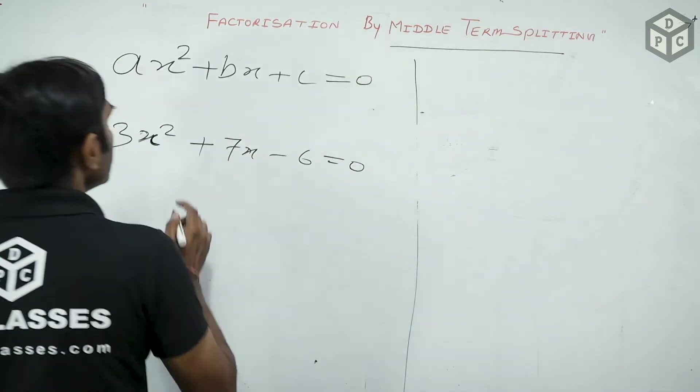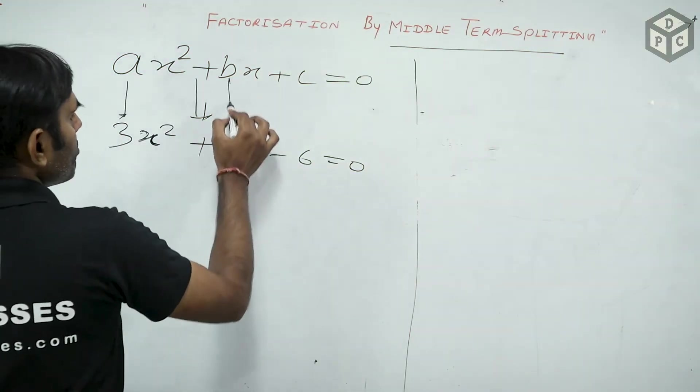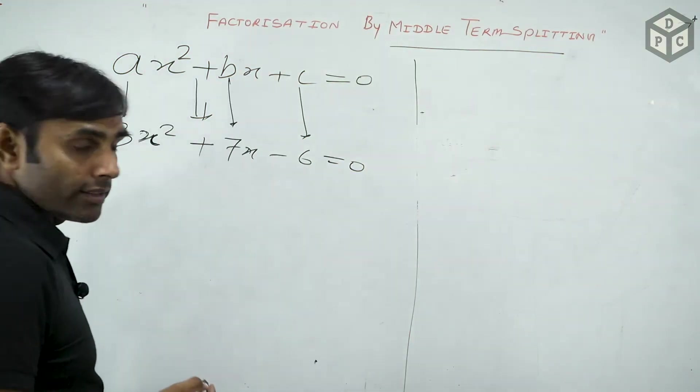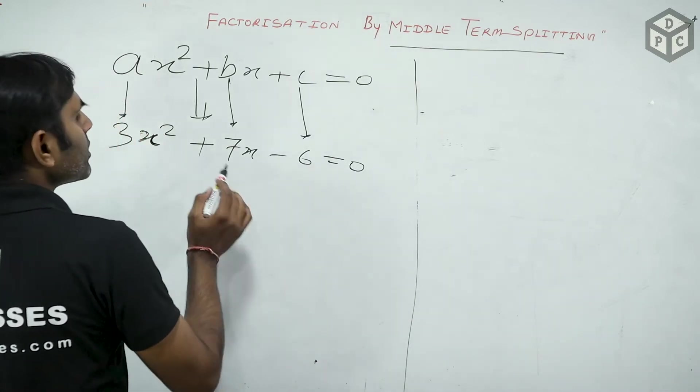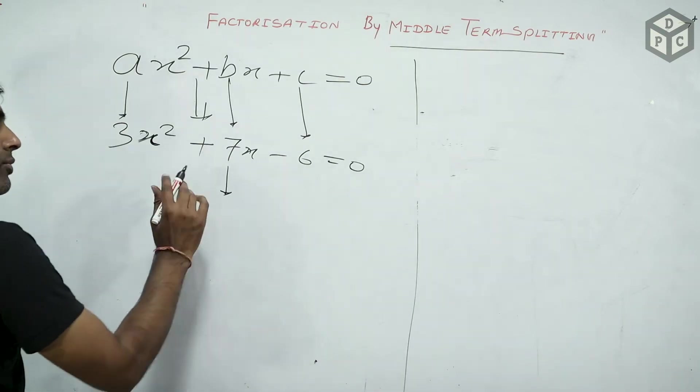Now we will compare the standard form. Place of a, 3, b, 7, and c, minus 6. What do I do? Middle term is splitting. The middle term is 7x. There are three terms. We will split this.